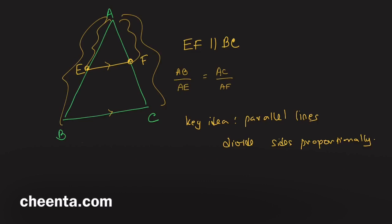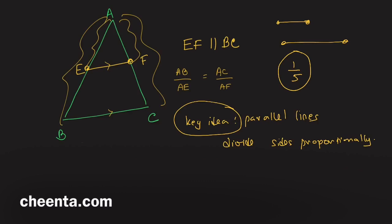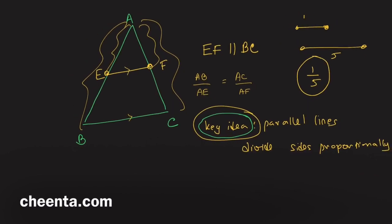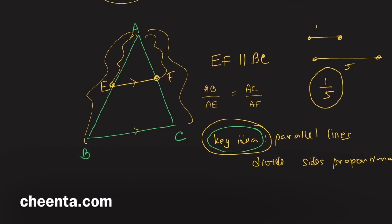Using this key idea, can you now create one over five? You have the length of one, you have the length of five, and you have that magical ability to create parallel lines, and now you also know this additional key idea. Let's see how we can do this.